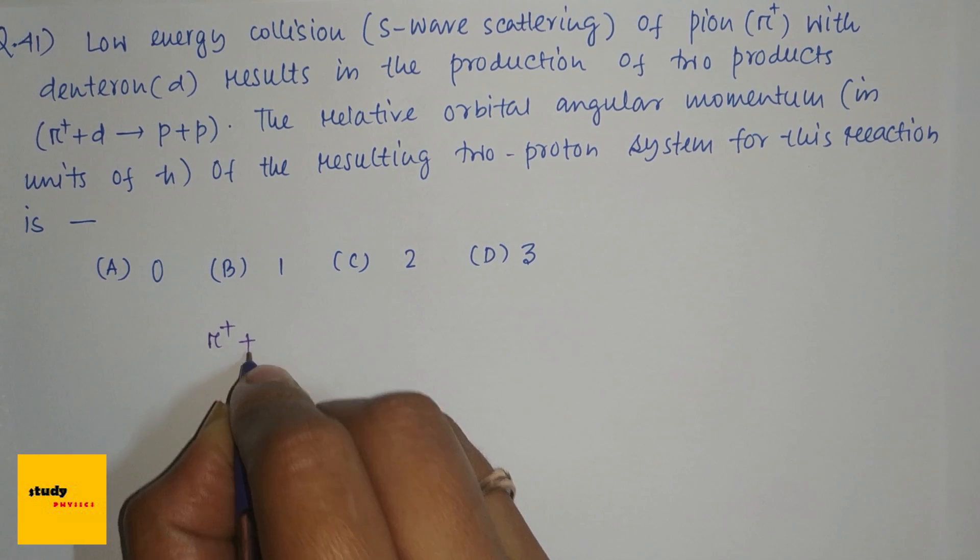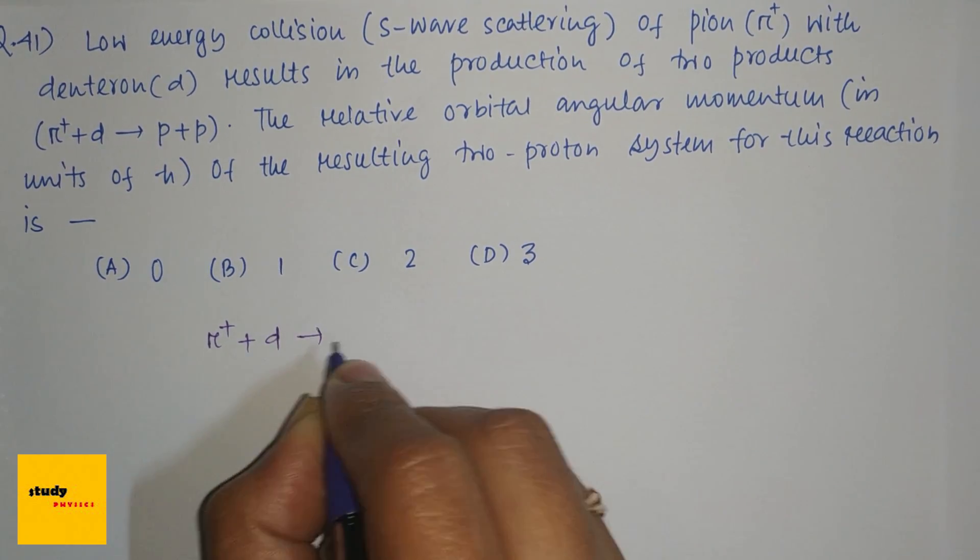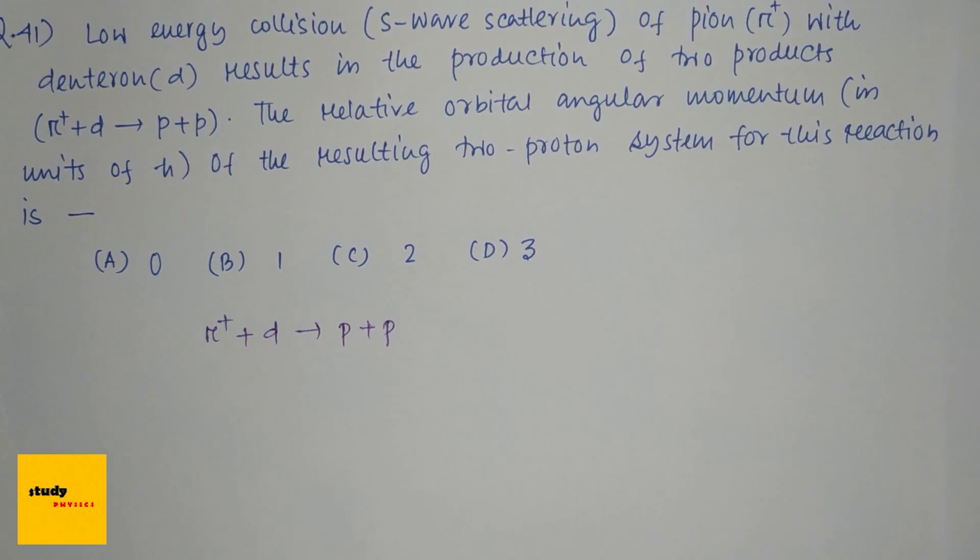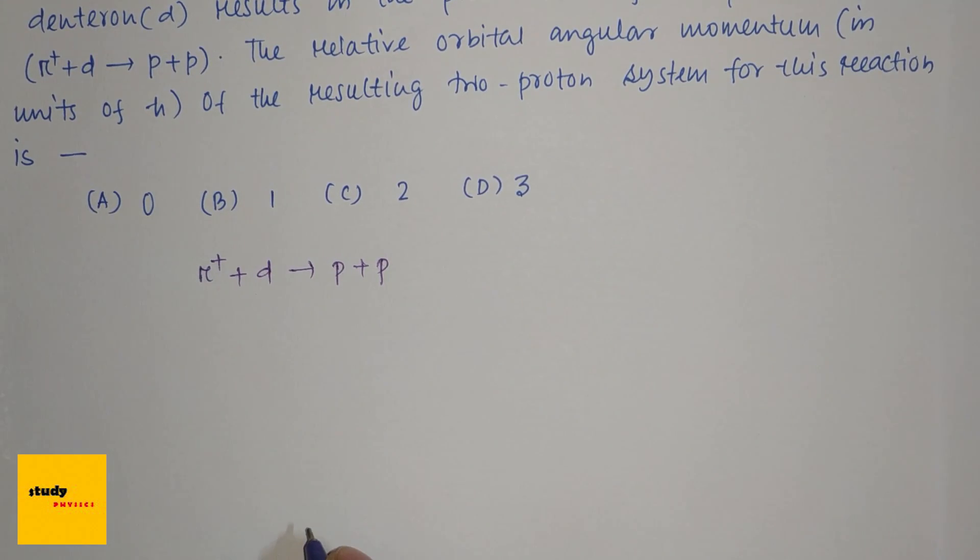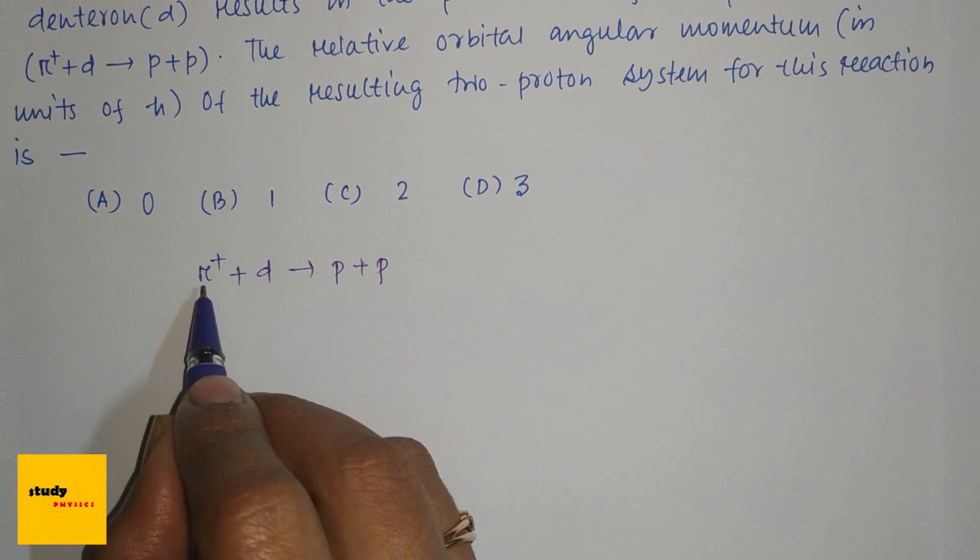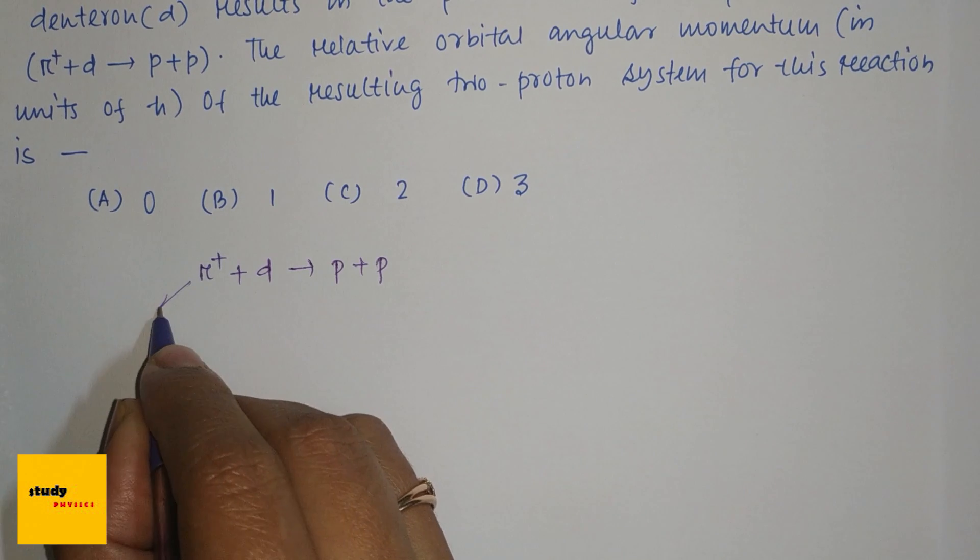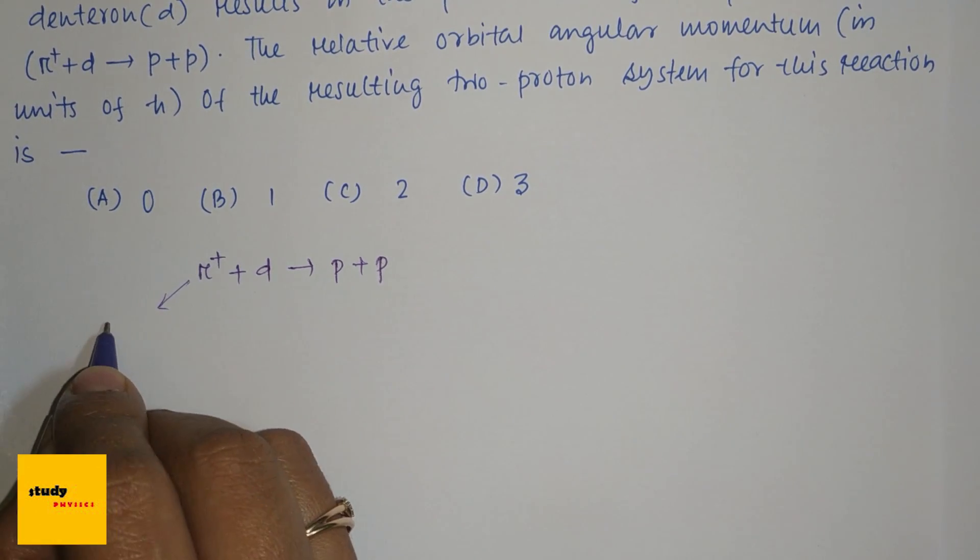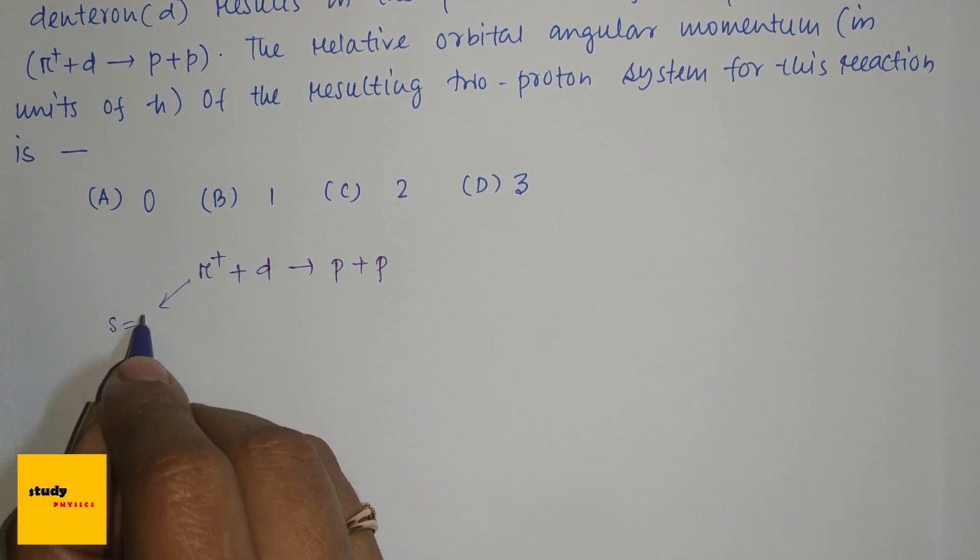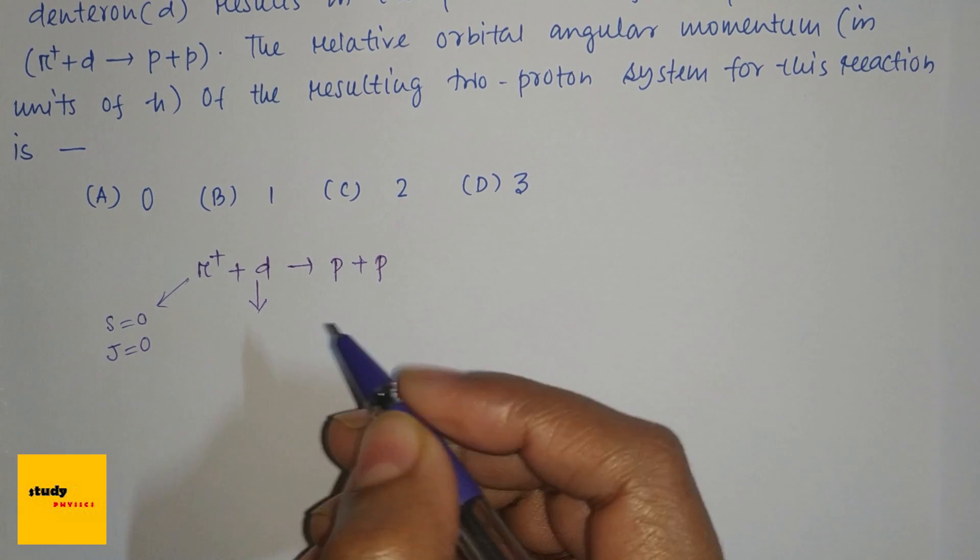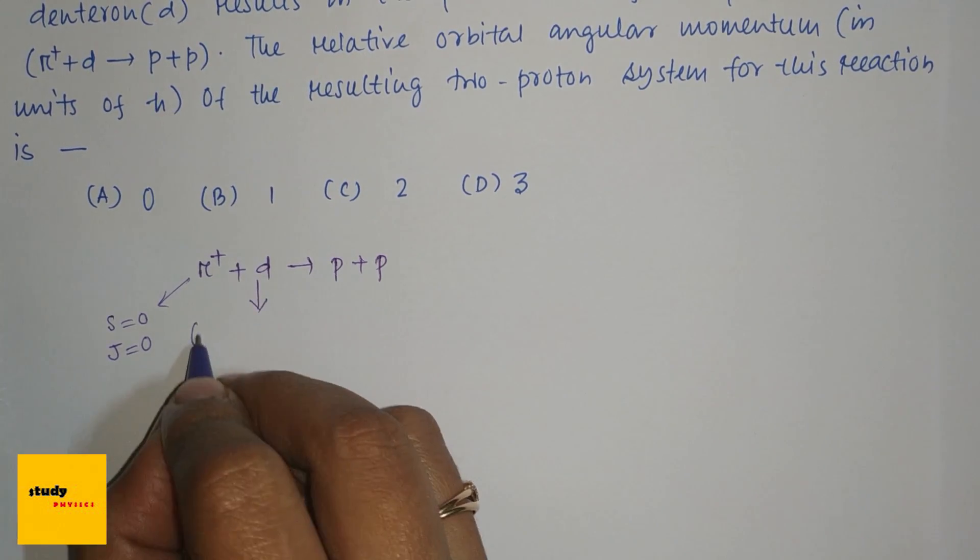So the reaction is π⁺ + d → p + p. We know that π⁺ has zero spin, so for this π⁺ has zero spin and zero angular momentum.